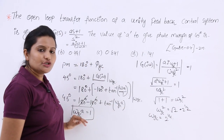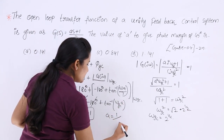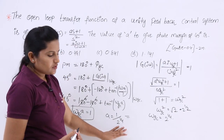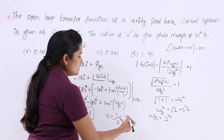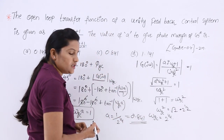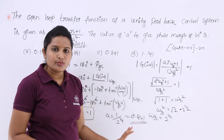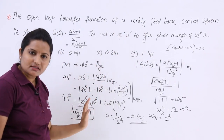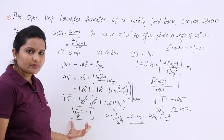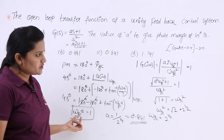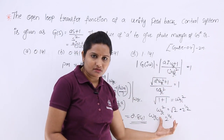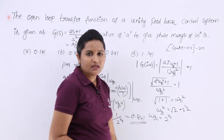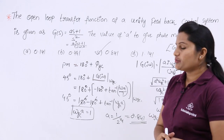Substituting back: a = 1 / ωGC = 1 / 2^(1/4), which equals approximately 0.841. So the value of 'a' that gives a phase margin of 45 degrees is 0.841. First we used the phase margin condition to get ωGC · a = 1, then used the gain crossover frequency condition to find ωGC = 2^(1/4), and substituted to get a ≈ 0.841. Option C is the correct answer.